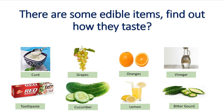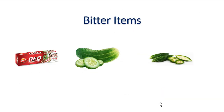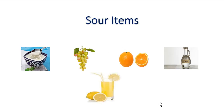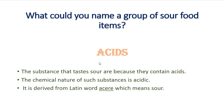So can we differentiate these edible items into two groups — the items that taste sour and the items that taste bitter? Of course! These are the sour items and these are the bitter items. Now a question arrives: what could you name a group of sour food items? What would you call them? The answer is: acids. Substances that taste sour contain acids.